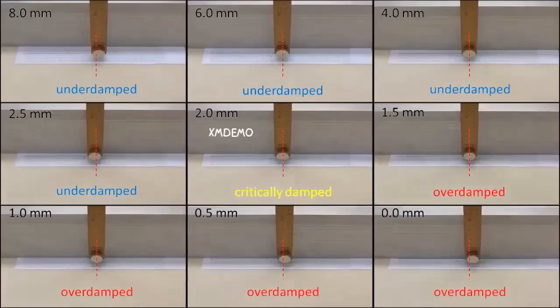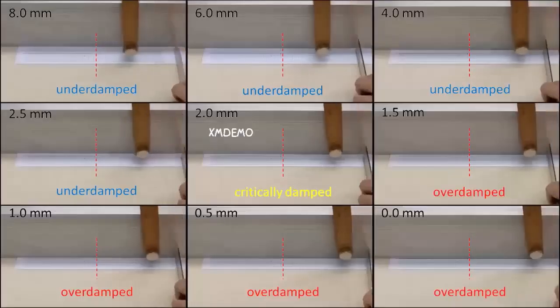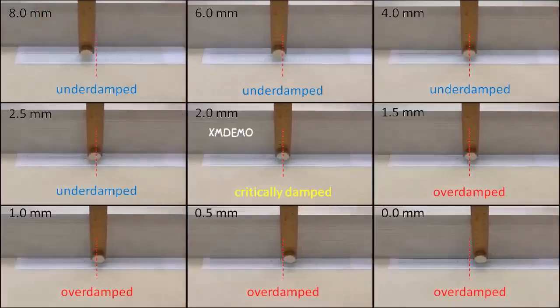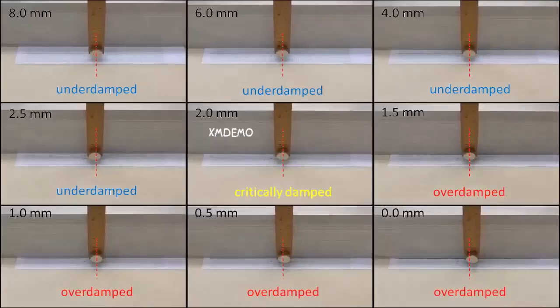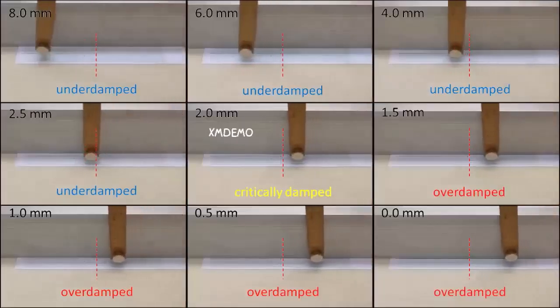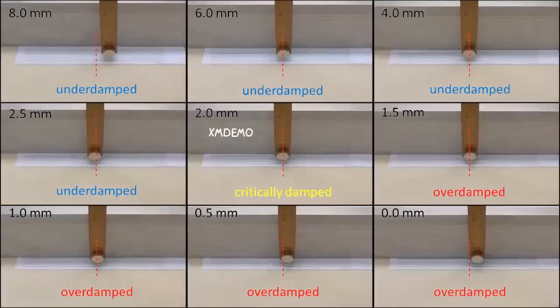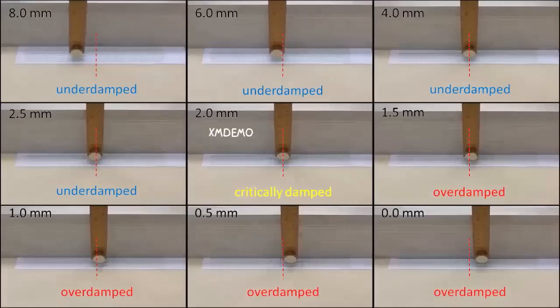Now, in many applications where we have unwanted oscillations, we are always aiming to critically damp the oscillation. From this collage here, can you understand why? See you at the comment section. Ta-ta!